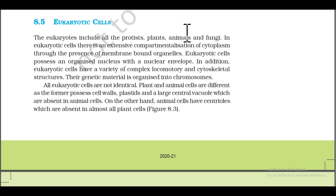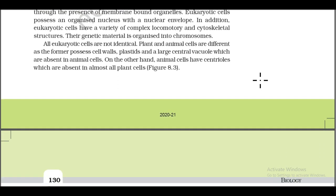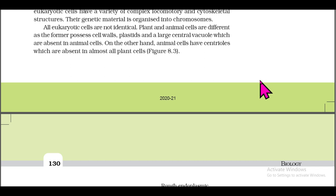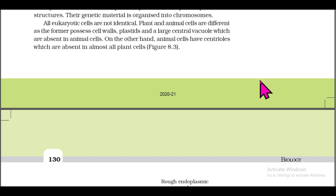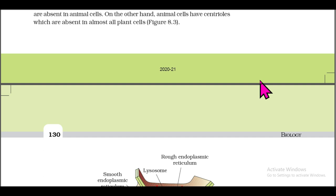Section 8.5: Eukaryotic Cells. The eukaryotes include all the protists, plants, animals, and fungi. In eukaryotic cells there is extensive compartmentalization of cytoplasm through membrane-bound organelles. Eukaryotic cells possess an organized nucleus with a nuclear envelope. They also have a variety of complex locomotory and cytoskeletal structures, and the genetic material is organized into chromosomes. Plant and animal cells differ: plant cells have cell walls, plastids, and a large central vacuole, while animal cells have centrioles absent in almost all plant cells.